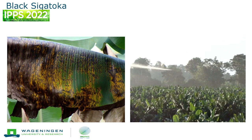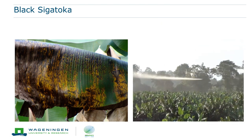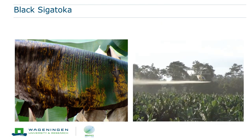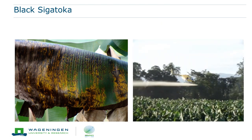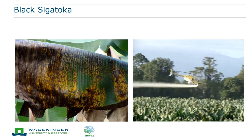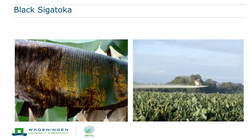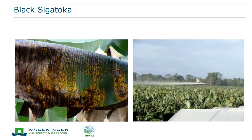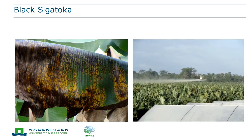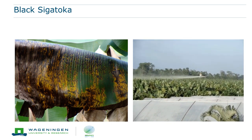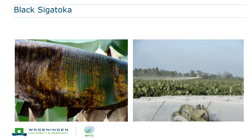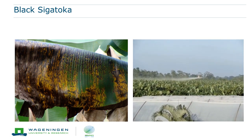Black Sigatoka's symptom causes complete defoliation of the huge banana leaves - every ten days a new leaf. In a plantation in Costa Rica, helicopters spray fungicide now 70 times per year. Due to the selection pressure of fungicides, the fungal population is increasingly insensitive. Eventually we run out of fungicides - this is an immense problem.